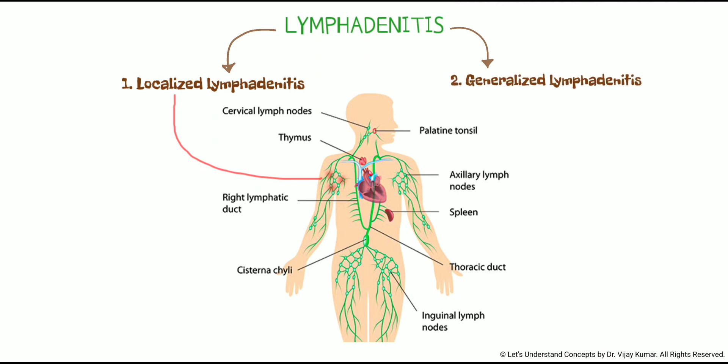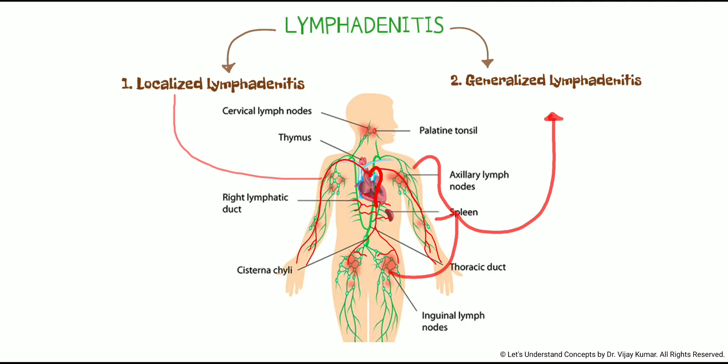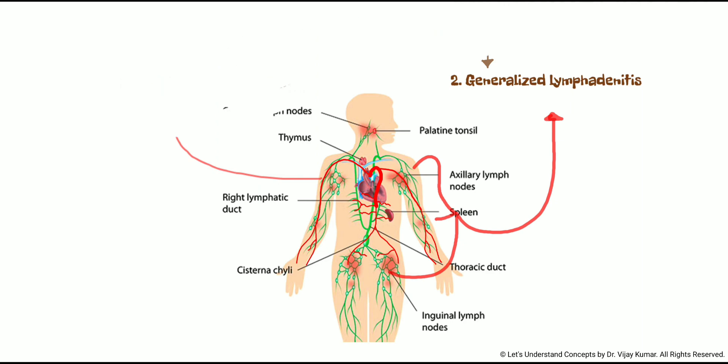Second, generalized lymphadenitis. This type of lymph node infection occurs in two or more lymph node groups, and may be caused by an infection that spreads through the bloodstream, or another illness that affects the whole body.